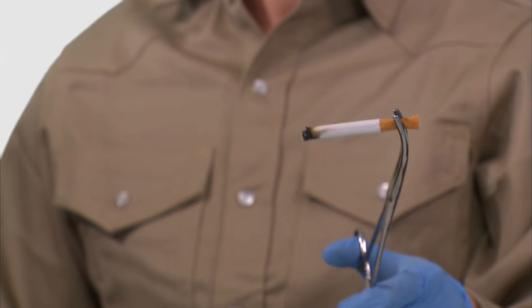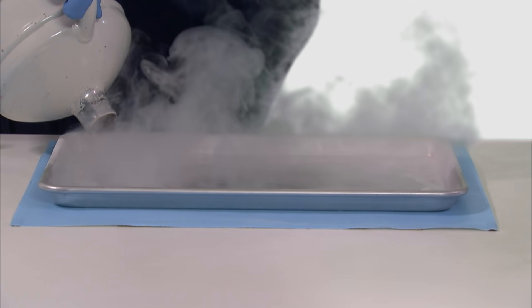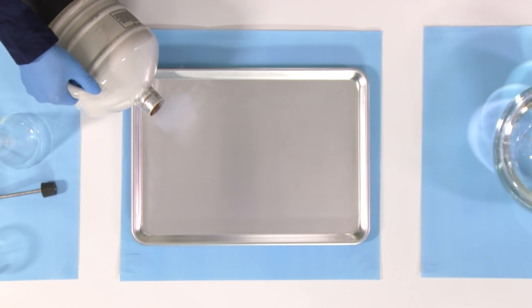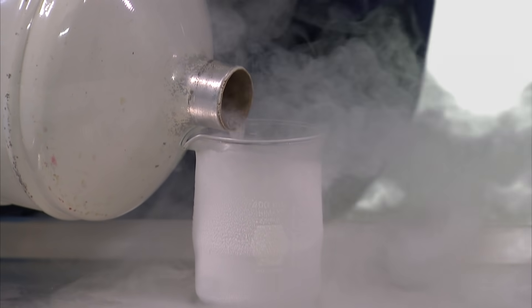LNG vapors will burn when mixed with oxygen in a 5 to 15 percent ratio and combined with an ignition source of at least 1,000 degrees Fahrenheit, which is what makes the fuel valuable. LNG is stored at minus 260 degrees Fahrenheit or minus 160 degrees Celsius to keep it in its liquid form. LNG has been used around the world for more than 50 years and has an impressive safety record. It really is a cool fuel.